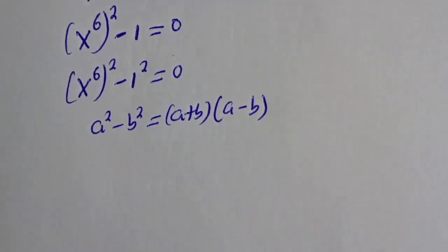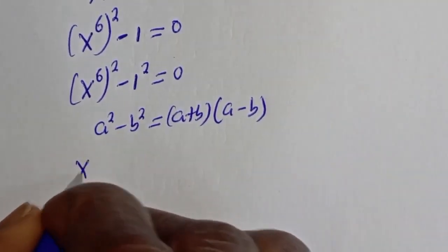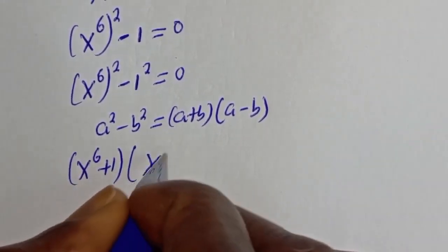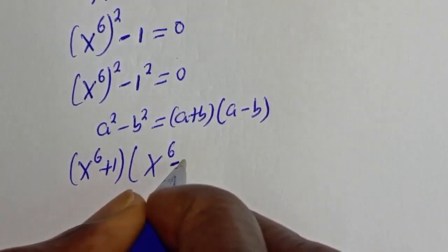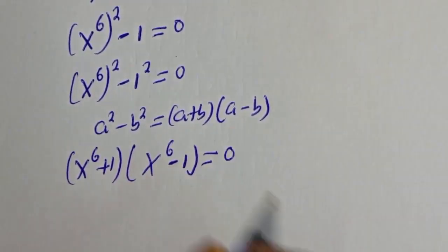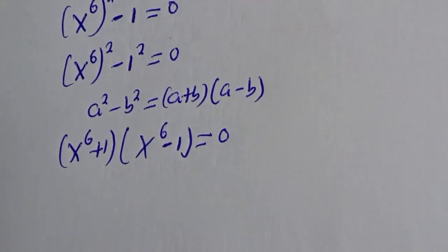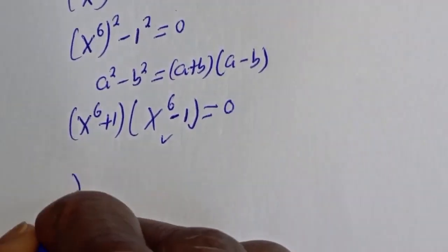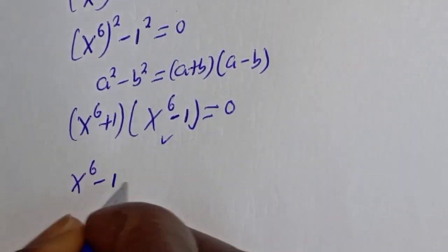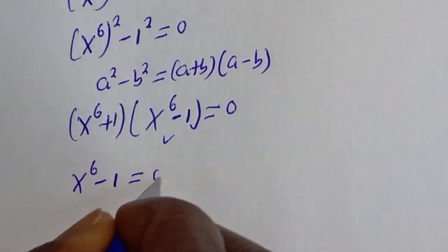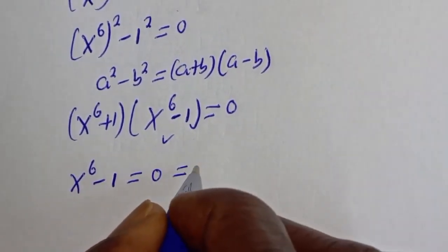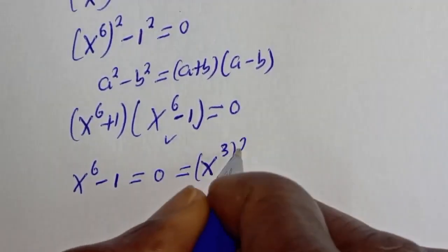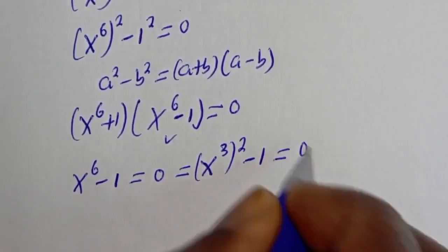Let's substitute: s raised to power 6 plus 1, bracket, s raised to power 6 minus 1, is equal to 0. So we can still express this — focusing on s raised to power 6 minus 1 is equal to 0 — as s raised to power 3, squared, minus 1 is equal to 0.